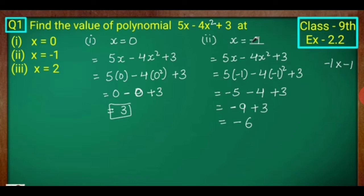This will be f(x) = 5x minus 4x squared plus 3. Put x equals to 0 in place of x. This will be 5 times 0 minus 4 times 0 squared plus 3. 5 times 0 is 0, 0 squared is 0, and 4 times 0 is 0. So 0 minus 0 plus 3, this will be plus 3.